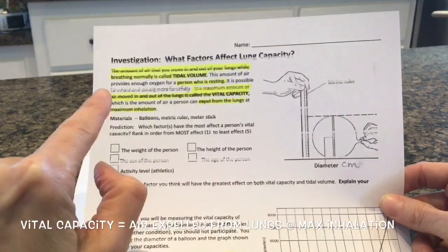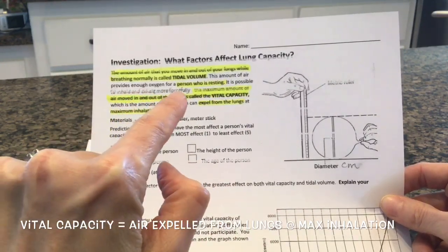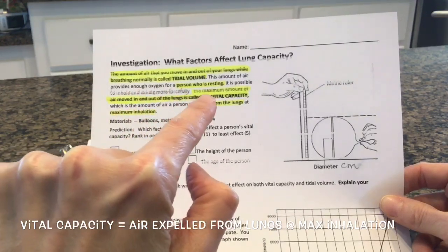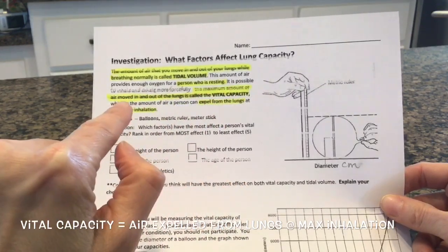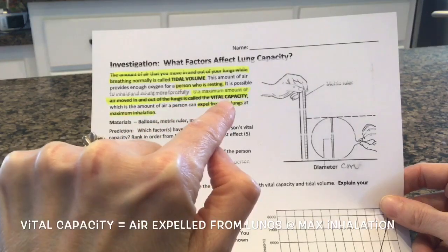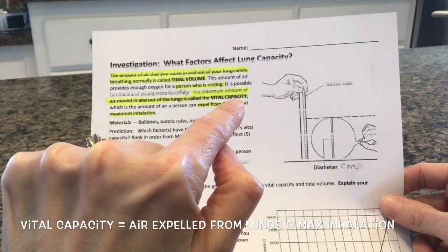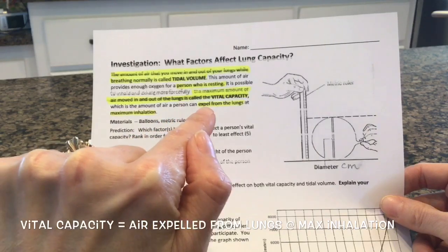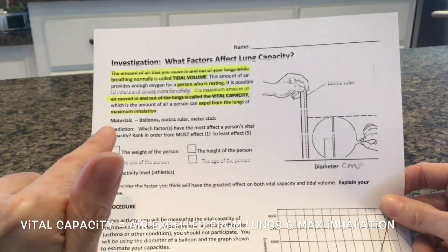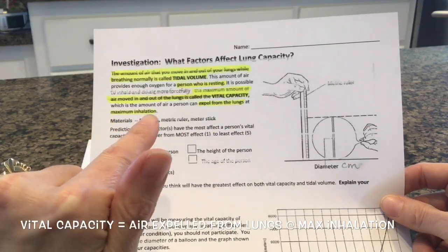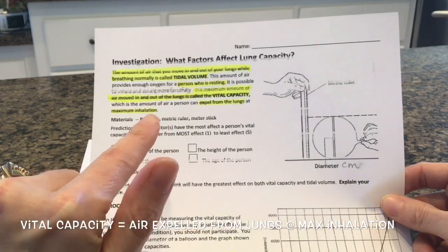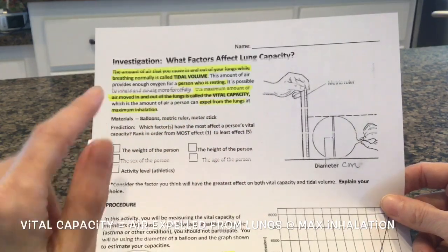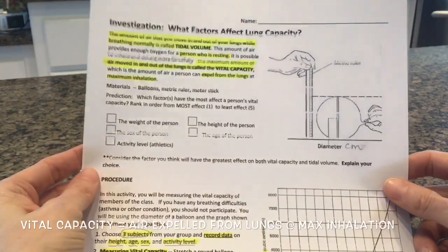It is possible to inhale and exhale more forcefully. The maximum amount of air moved in and out of the lungs is called vital capacity — the amount of air a person can expel from the lungs at maximum inhalation. So you would take a deep breath in and then blow it all the way out. That's what we're going to be doing with the lab today.